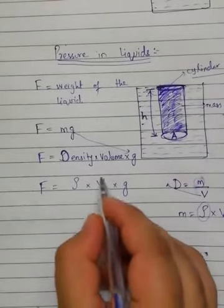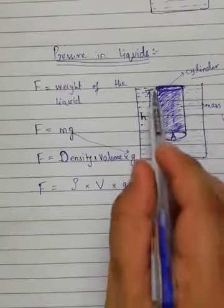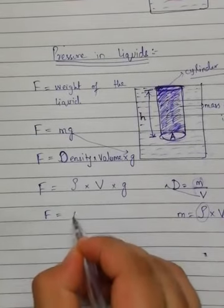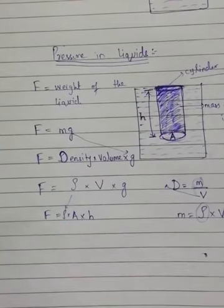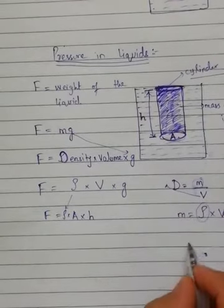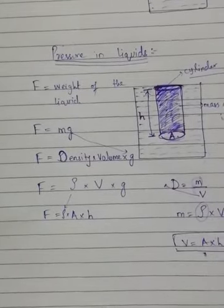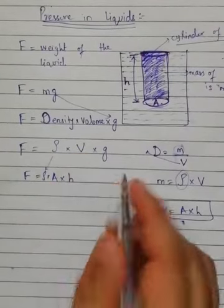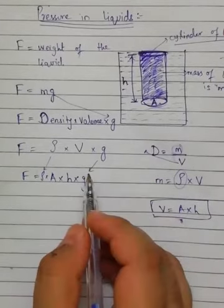Now we know the volume of this liquid. If we want to find the volume present in this region, we just multiply the area with the height. So here is the density as it is — instead of writing the volume, we just multiply this area with this height, because area multiplied by height is actually the volume. So I write area into height instead of volume, and g as it is. G is the gravitational acceleration.